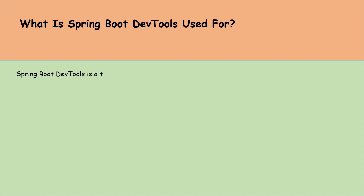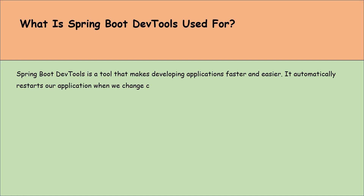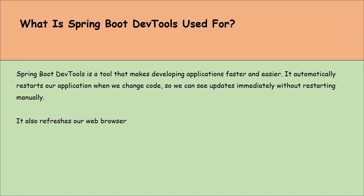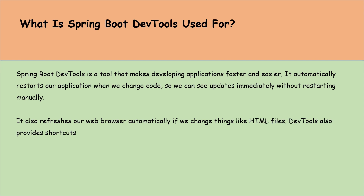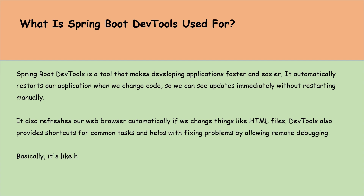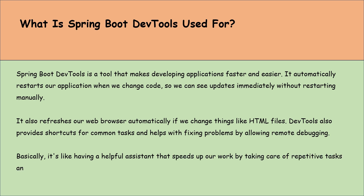What is Spring Boot DevTools used for? Spring Boot DevTools is a tool that makes developing applications faster and easier. It automatically restarts our application when we change code, so we can see updates immediately without restarting manually. It also refreshes our web browser automatically if we change things like HTML files. DevTools also provides shortcuts for common tasks and helps with fixing problems by allowing remote debugging. Basically it's like having a helpful assistant that speeds up our work by taking care of repeated tasks and letting us focus on writing and improving our code.